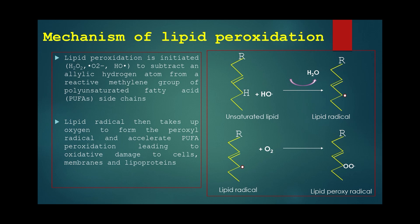Regarding the mechanism of lipid peroxidation, it is initiated by reactive radicals — hydrogen peroxide, superoxide anions, and hydroxyl radicals. These are quite reactive but short-lived. They abstract an allylic hydrogen atom from a reactive methylene group of polyunsaturated fatty acids (PUFA) side chains. As shown on the right side of the video, an unsaturated lipid in the presence of a hydroxyl radical gets converted into a lipid radical with the release of a water molecule.